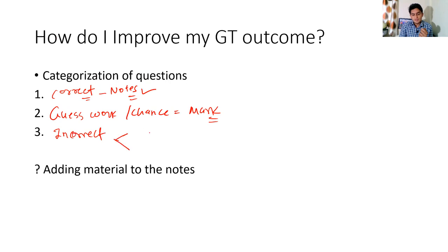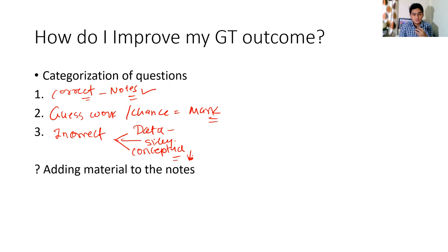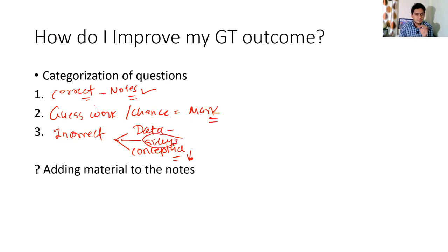Category three: questions you got incorrect. See why you got them wrong - maybe it was a data-based question, a conceptual mistake, or a silly mistake. If it is a data-based question, just add a single line to your notes or take a screenshot. If it is a conceptual question from an important topic, read and understand the concept again. If it is a silly mistake, analyze whether you read the question wrong or misinterpreted it, so you can improve on silly mistakes.